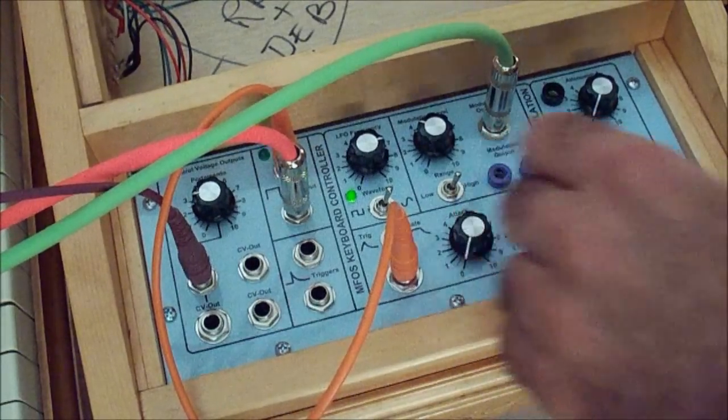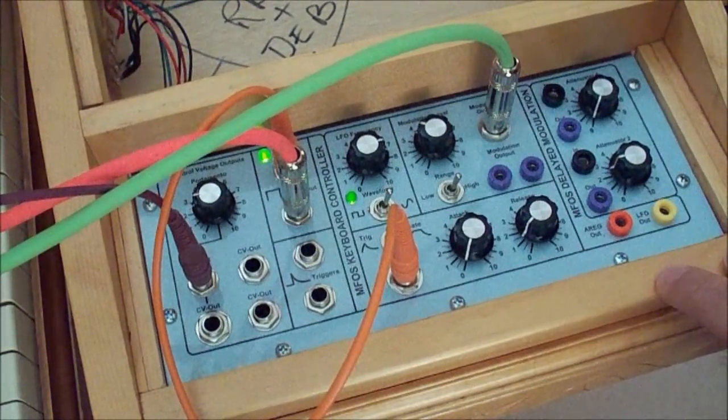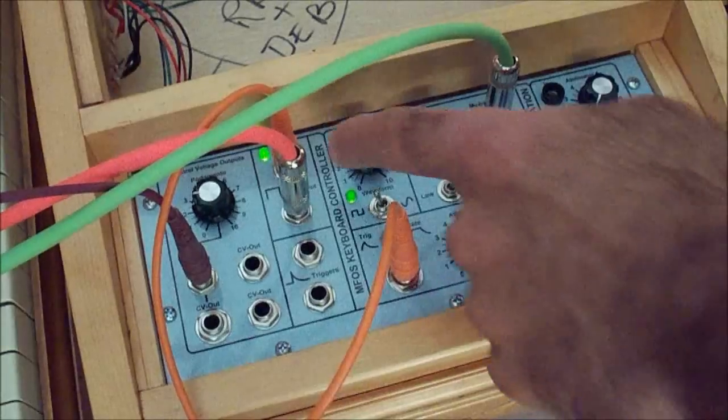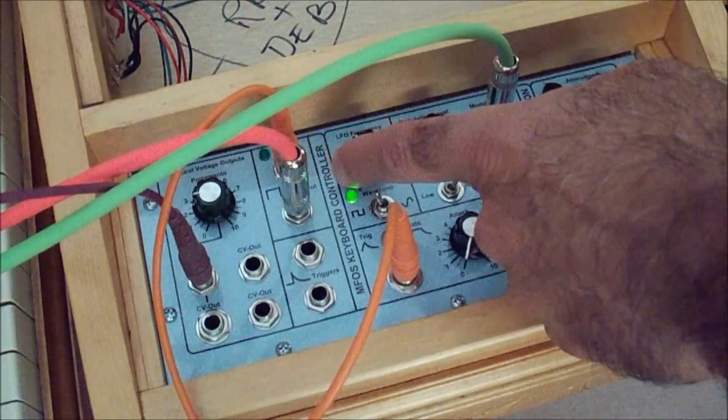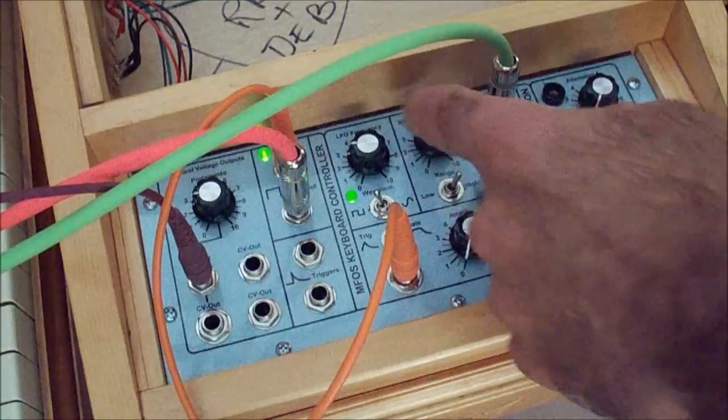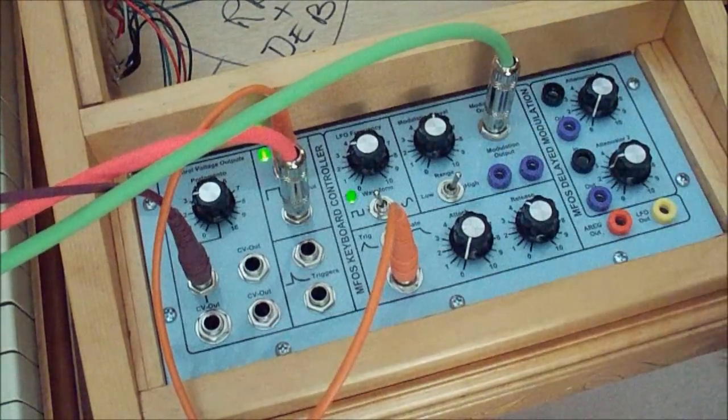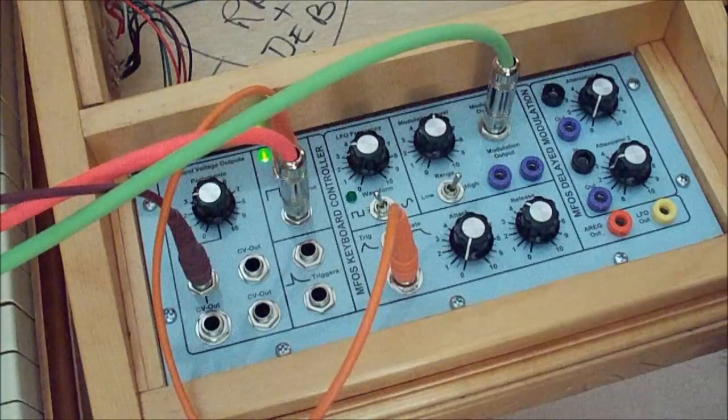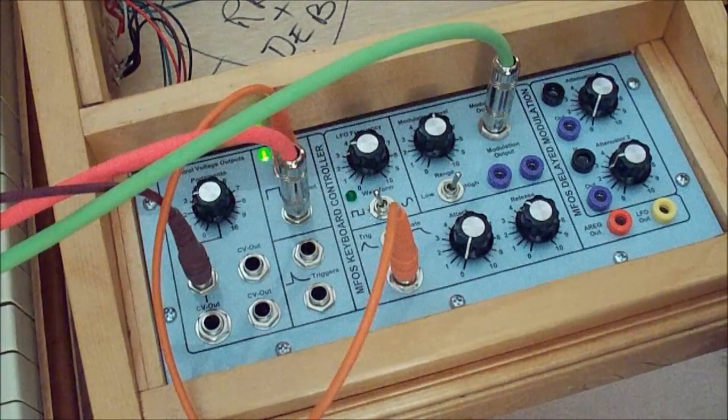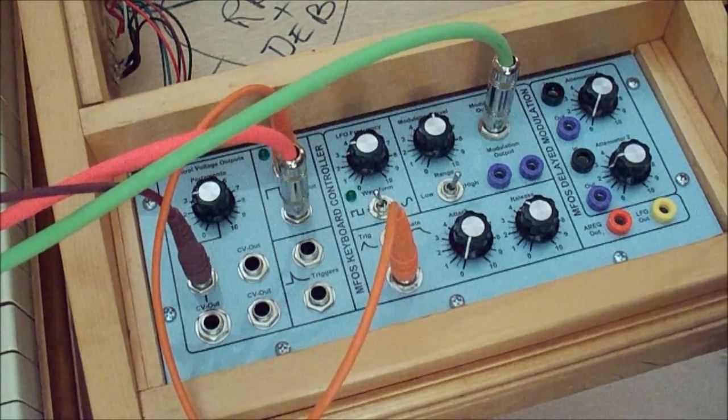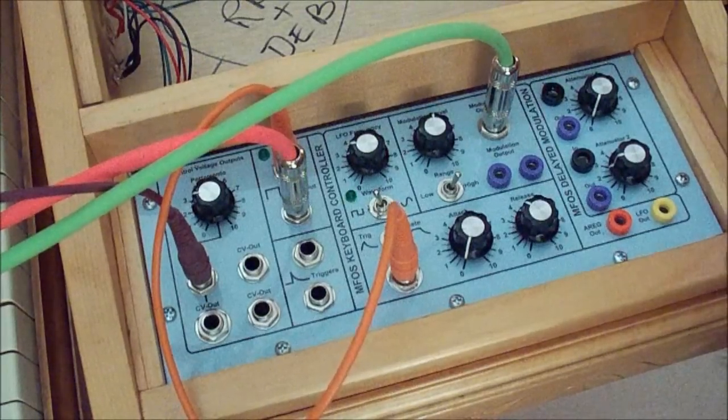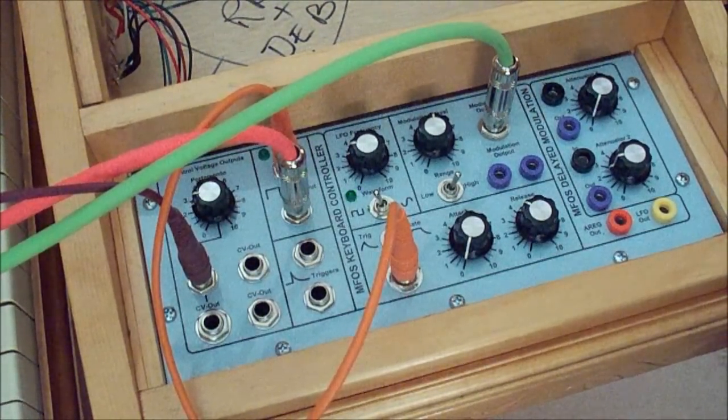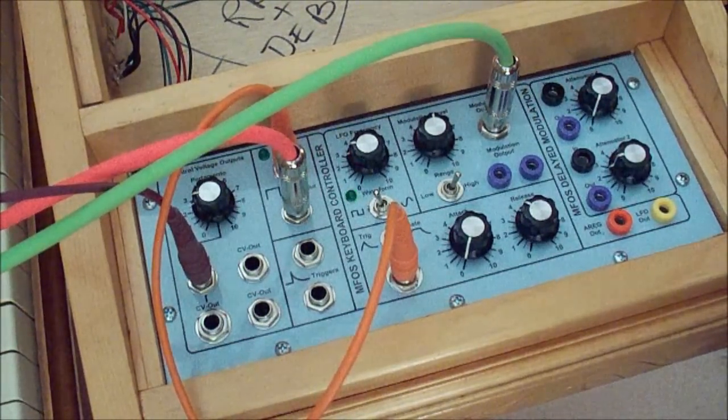You can make that decay really slow. Go to square waves. So as you can see, it's a fun module. It's going to provide you with the delay modulation patch. You can forget about ever having to patch it again and just use this.